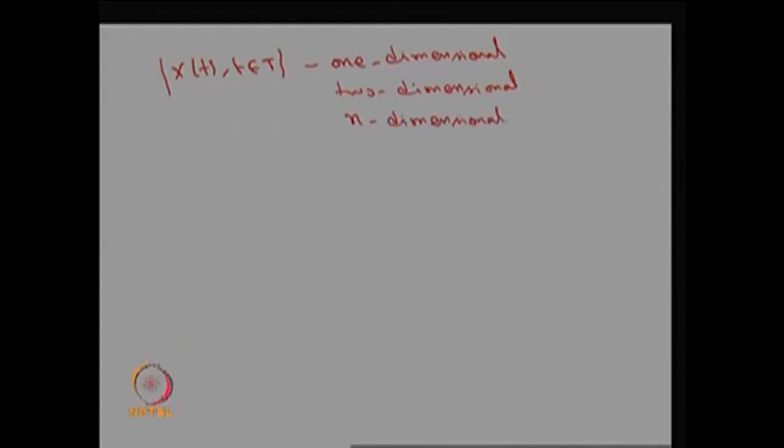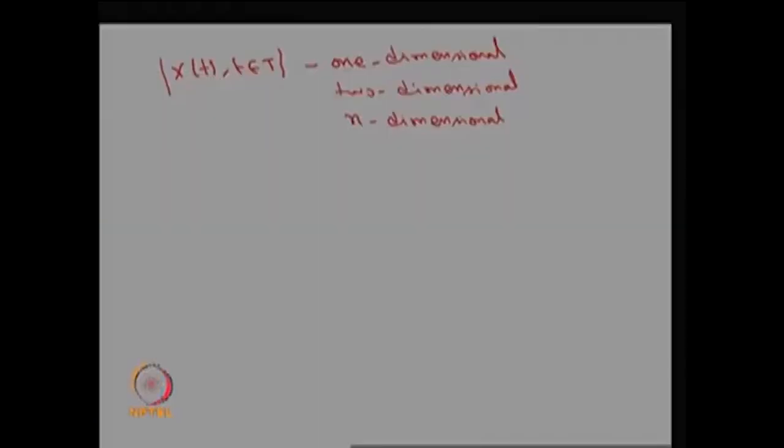We have discussed what a stochastic process is, how to create it, the parameter space, and the state space. We also discussed the two different approaches to create a stochastic process. Now we are discussing the dimension of the stochastic process — it could be one-dimensional, two-dimensional, or n-dimensional. Let me give a simple example of a two-dimensional case.